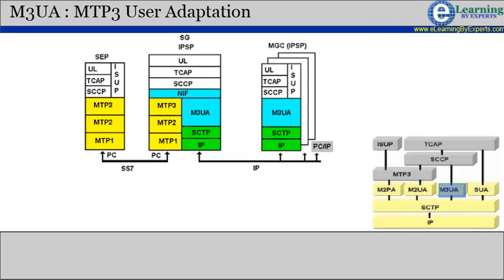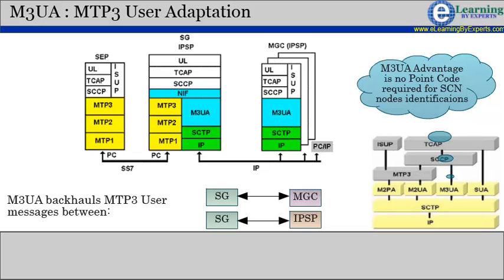M3UA supports the transport of any SS7 MTP3 user signaling, such as ISUP and SCCP messages, over IP using the services of SCTP. The protocol is used for communication between a signaling gateway and a media gateway controller or IP-resident database.